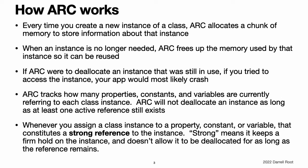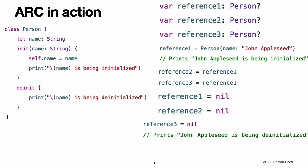ARC will not deallocate an instance as long as at least one active reference to that instance still exists. To make this possible, whenever you assign a class instance to a property, constant, or variable, that property, constant, or variable makes a strong reference to the instance. The reference is called a strong reference because it keeps a firm hold on that instance and does not allow it to be deallocated for as long as that strong reference remains.